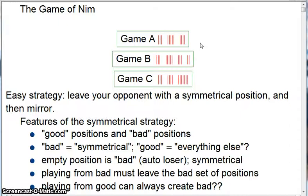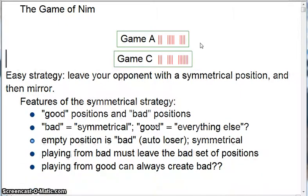I analyzed game B before in terms of using the symmetrical strategy, so let's go ahead and delete that and talk about a couple of different games, A and C. Let me just talk about what we needed in the strategy. In the symmetrical strategy, it was pretty good that there were good and bad positions. Bad was symmetrical, that's what you want to leave your opponent with. Good, maybe everything else was a little unclear.